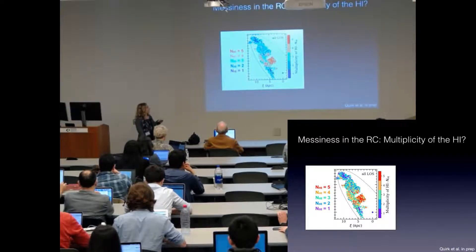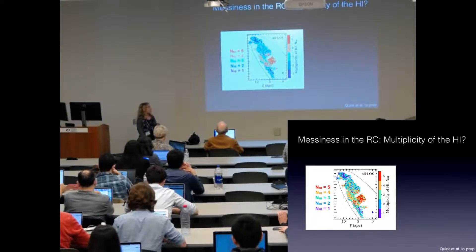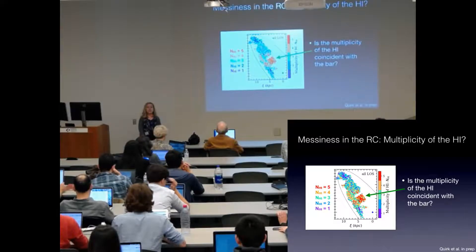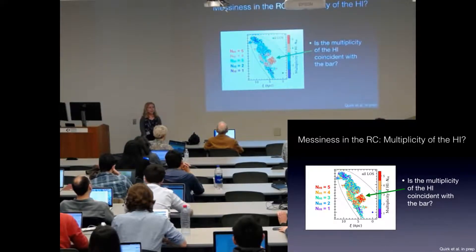This plot shows complexity of the line of sight as denoted by the number of peaks in the H1 spectrum. You can see that the most complex line of sight, those that have five peaks in the H1 spectrum, are clustered around here, which might be coincident with the bar. So maybe the bar is disturbing some of the H1 gas.